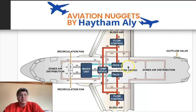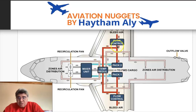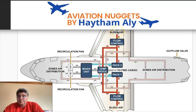We also have an enhanced or optimized temperature regulation in addition to the basic regulation done by the packs. This optimized temperature regulation depends on hot air taken from before the packs, which is added at a downstream temperature regulation point to fine-tune zone temperatures.